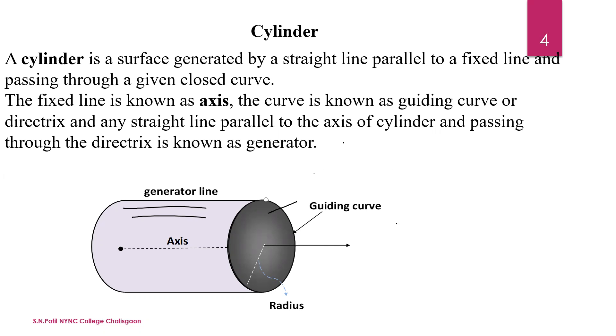Any straight line parallel to the axis of the cylinder and passing through the directrix is known as a generator.